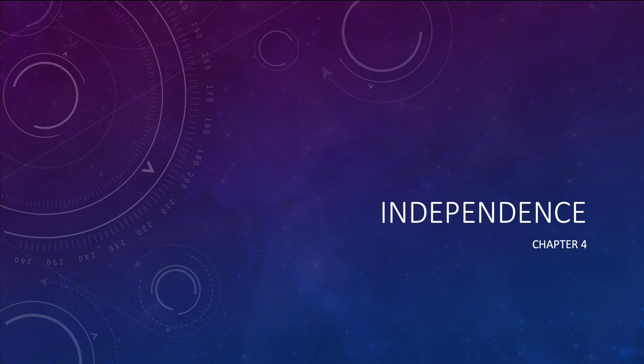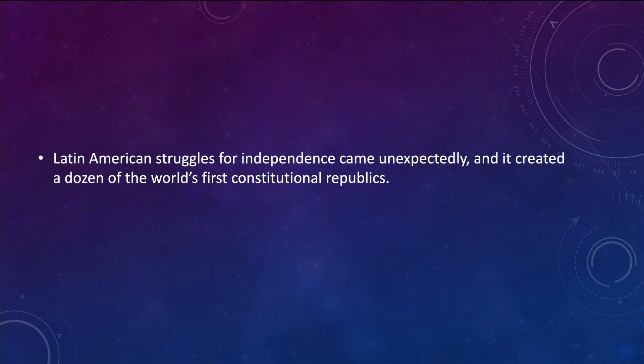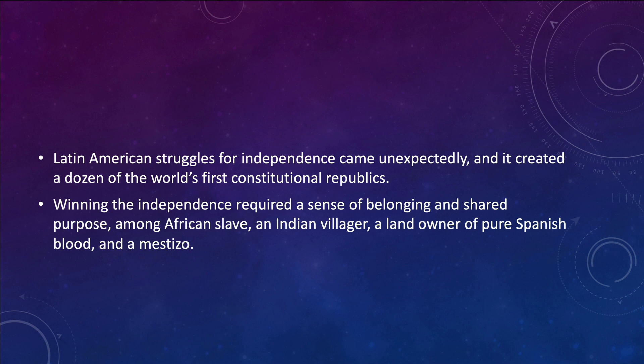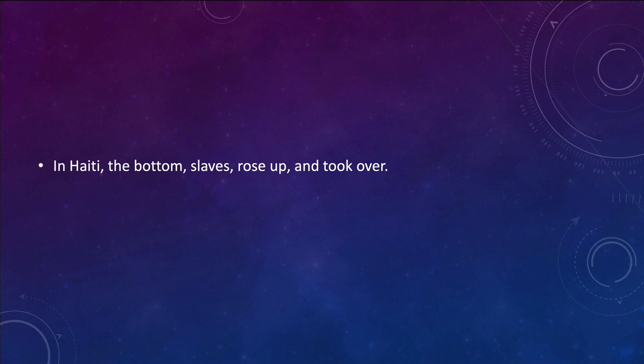Today we're going to talk about independence from chapter 4. Latin American struggles for independence came very unexpectedly, and later it creates a dozen constitutional republics that will become countries. Winning independence required everybody to get together as one, including the African slaves, the Indian villager, the landowner, and the mestizo. Mestizos are half Spanish and half Indian. They all had to come together under the umbrella of nativism.